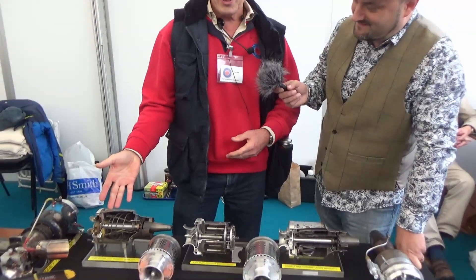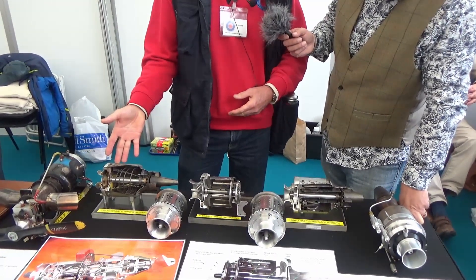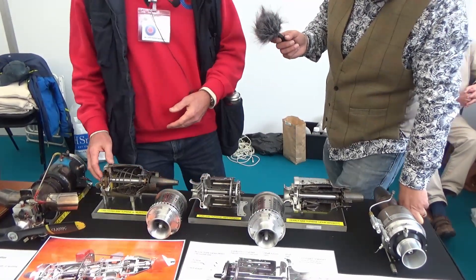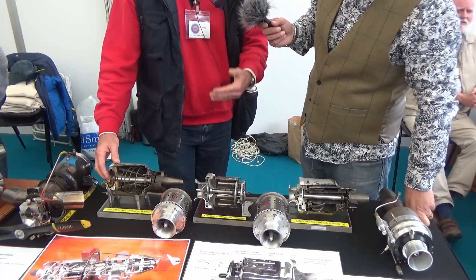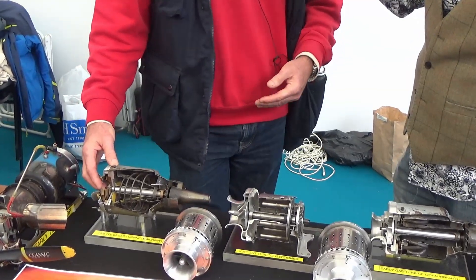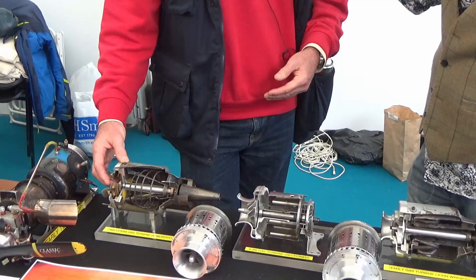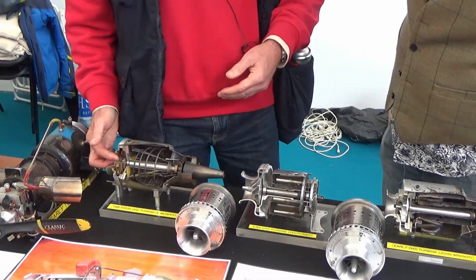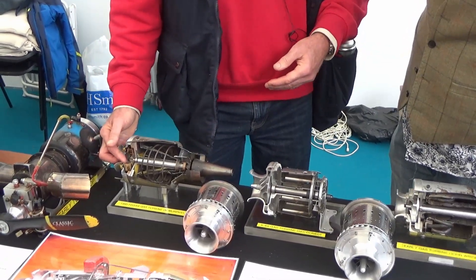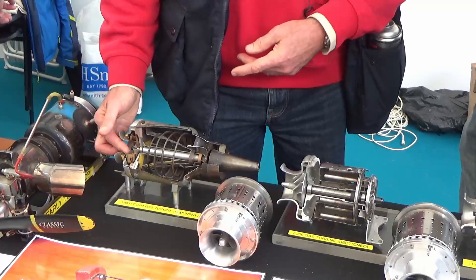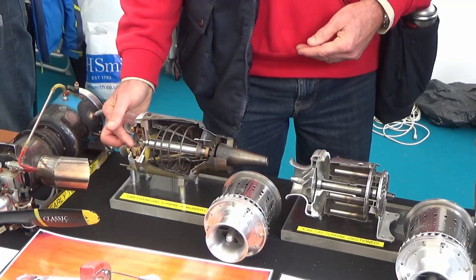But it all started back in the early 1990s with this engine here. This is called the FD3. Now the interesting thing with this, the design was that it could be built by an average modeler. And the interesting thing about it, which many people actually find difficult to fathom, is the compressor is fabricated out of plywood.